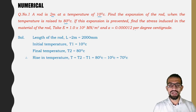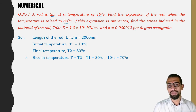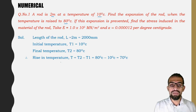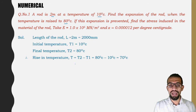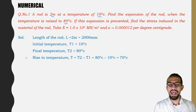The final temperature is greater, so there is a rise. T = T2 − T1 = 80°C − 10°C = 70°C. So the rise in temperature is 70 degrees centigrade.